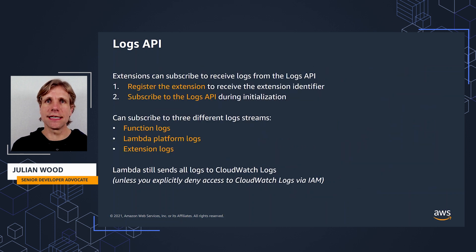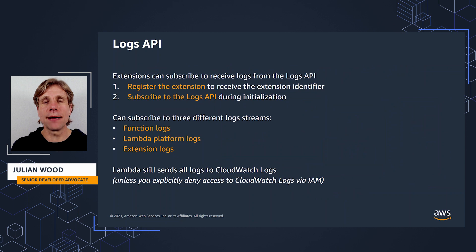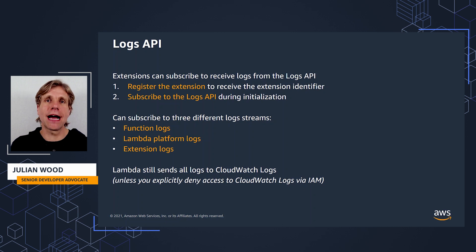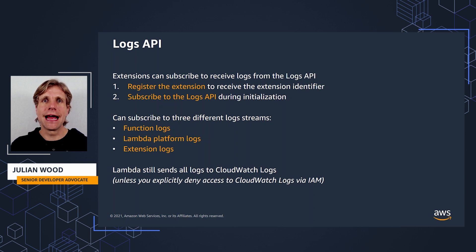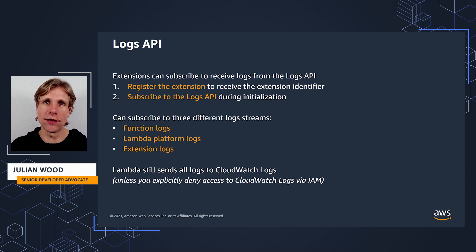First, the extension needs to register with the extensions API in the normal way to receive the extension identifier. The extension can then subscribe to receive logs by sending a request to the logs API. The logs API allows extensions to subscribe to three different log streams: function logs that the Lambda function generates and writes to standard out or standard error; Lambda platform logs such as the start, end, and report lines; and extension logs that extension code generates. The logging extension needs to run a local endpoint to receive the logs from Lambda.